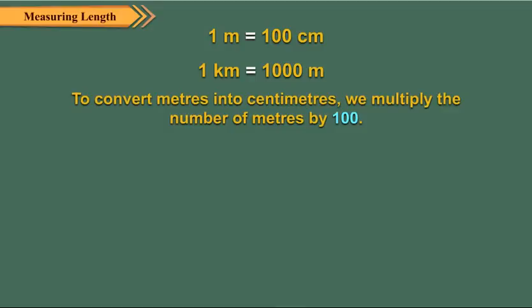To convert meters into centimeters, we multiply the number of meters by 100. Let us now convert 7 meters into centimeters.